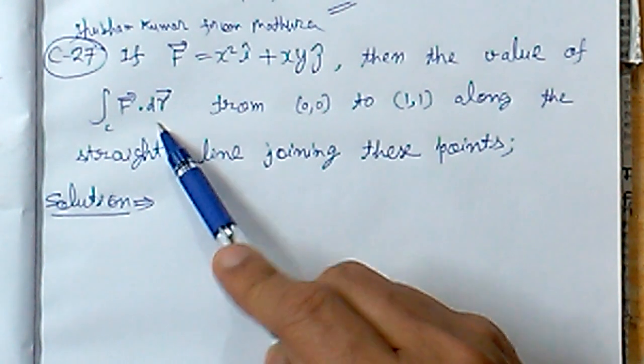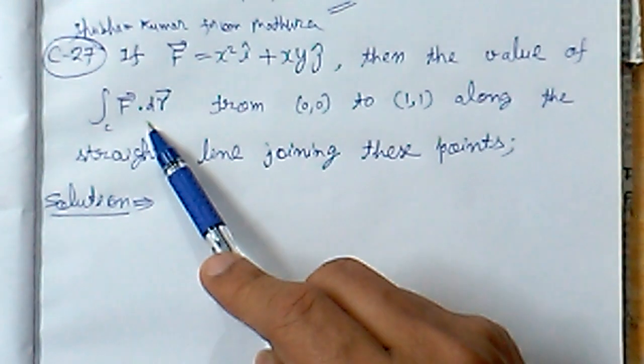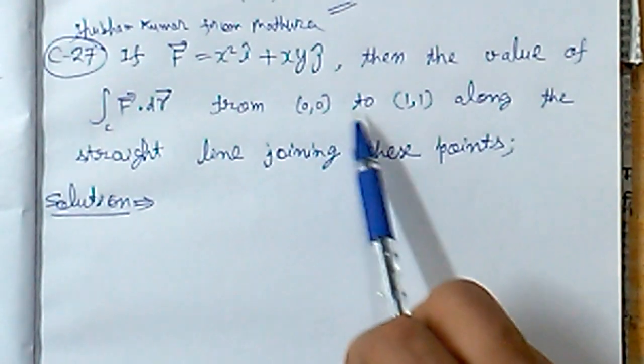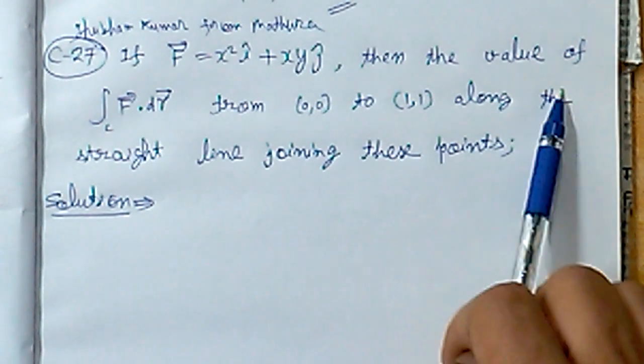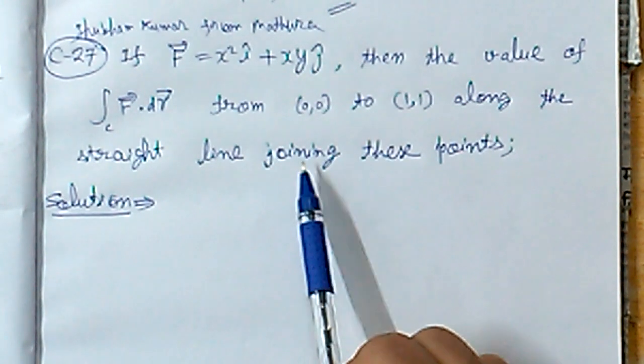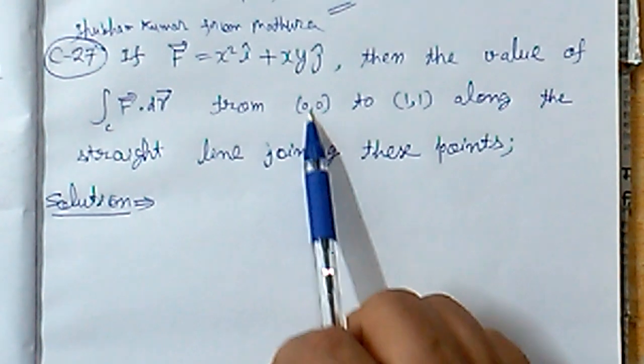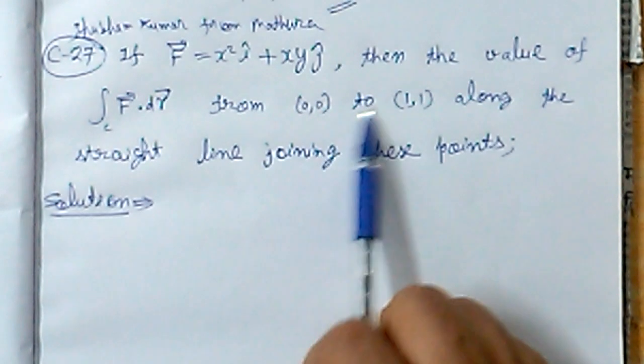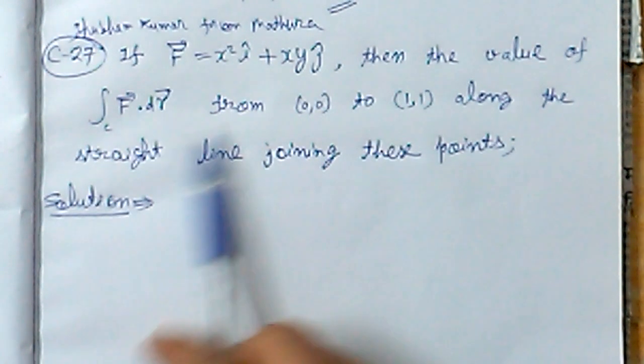integral F dot dr, a line integration F dot dr from (0,0) to (1,1) along the straight line joining these points. We need to find the integral value along the line joining these points.